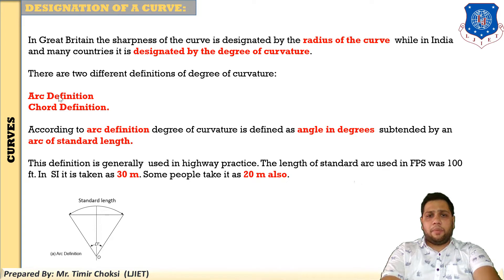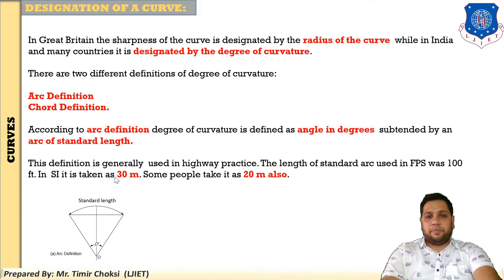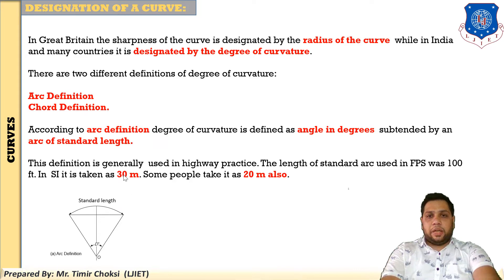Depending upon the length of the standard arc — the standard length is taken as 100 feet in older units — but nowadays the unit is meters, so it is taken as 30 meters, and some highway designers take it as 20 meters also. But the standard arc length in use nowadays is 30 meters. So the standard length is 30 meters, and this is the first definition based on arc definition.